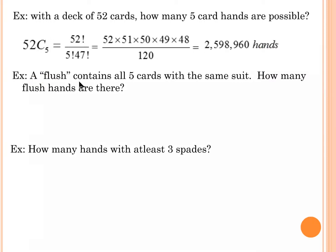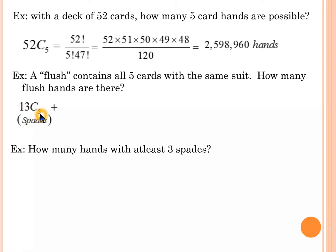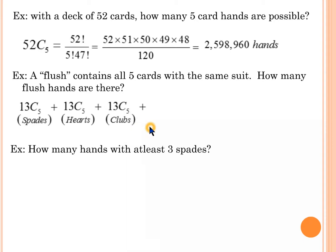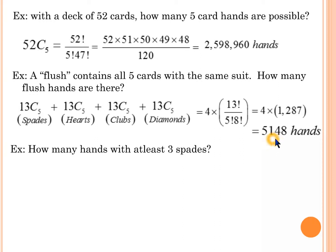Next example: a flush contains all five cards with the same suit. How many flush hands are there? If I consider spades, that's 13 choose 5, because there are 13 spades and I want five of them. Then I need to consider the other categories — hearts, clubs, and diamonds — each also giving 13 choose 5. Adding them all together gives a total of 5,148 hands.